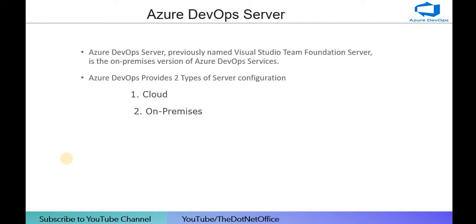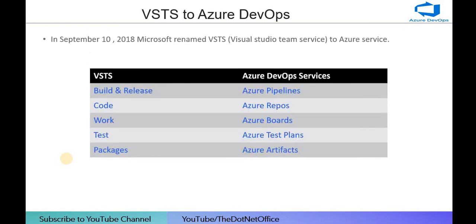Now let's understand what is Azure DevOps Server. Azure DevOps Server was previously named Visual Studio Team Foundation Server and it is the on-premises version of the Azure DevOps service. There are two types of server configurations: cloud and on-premises. Cloud means we keep our full code on the cloud, while on-premises means the code is kept on a local system where we make changes and then commit it to the server repository.